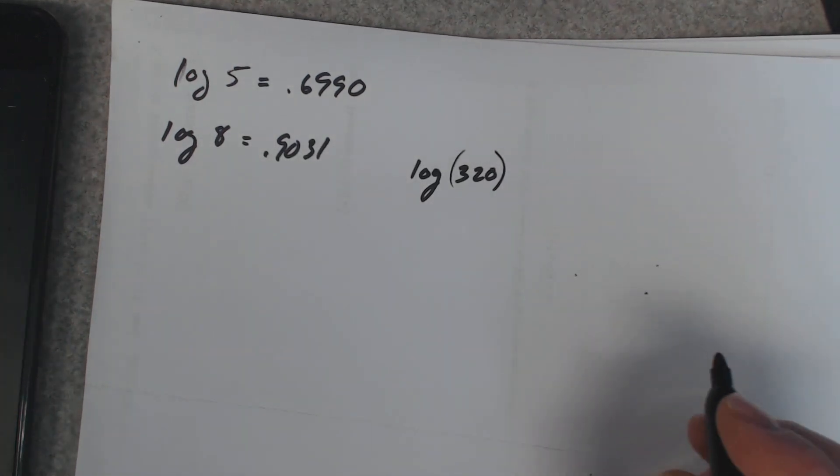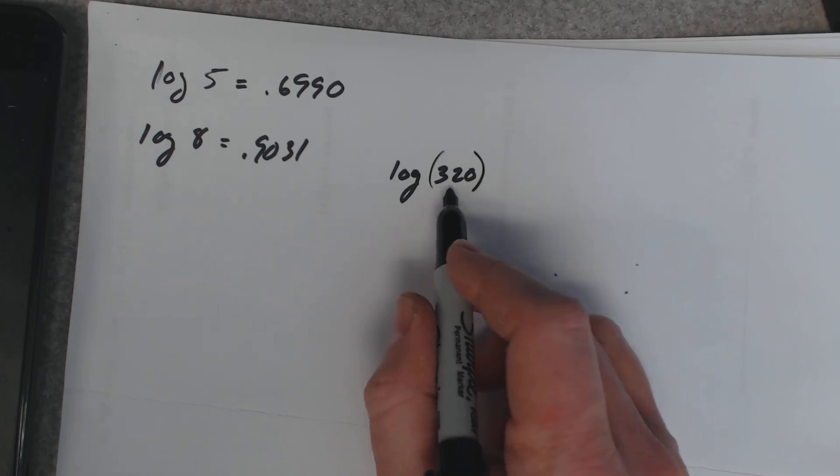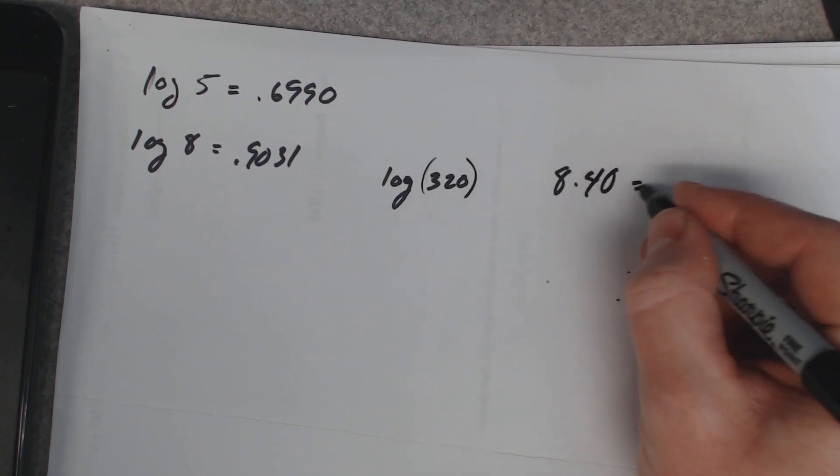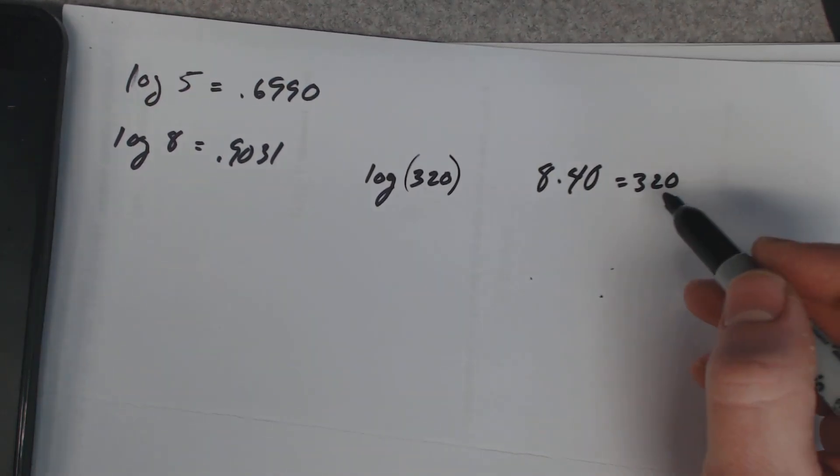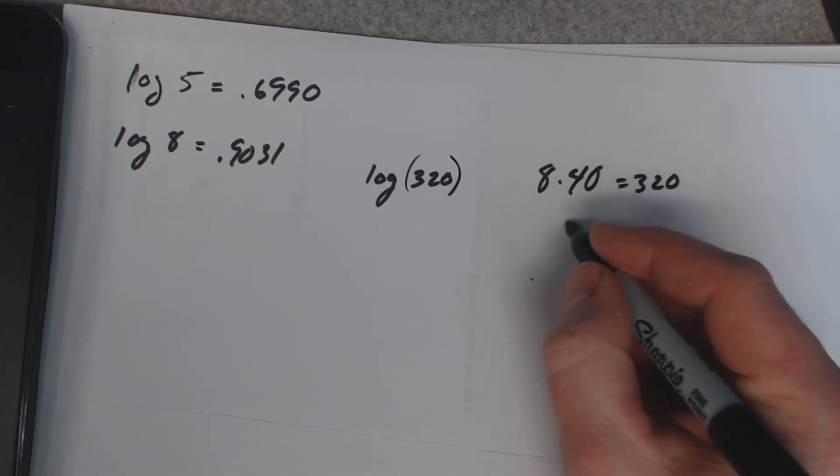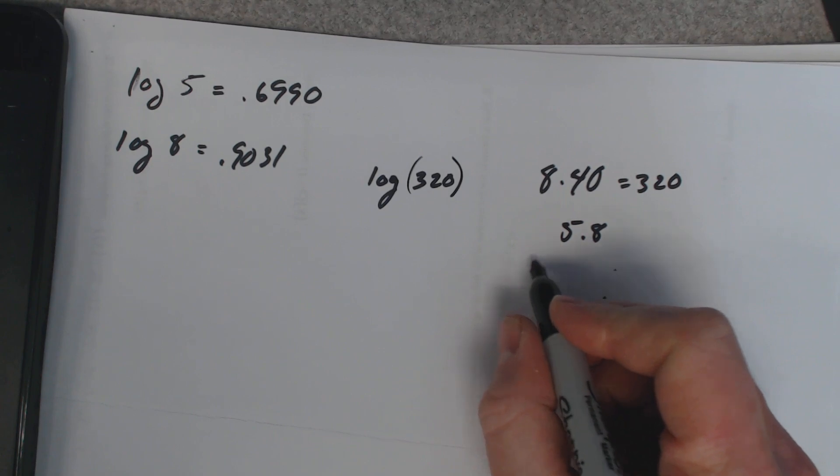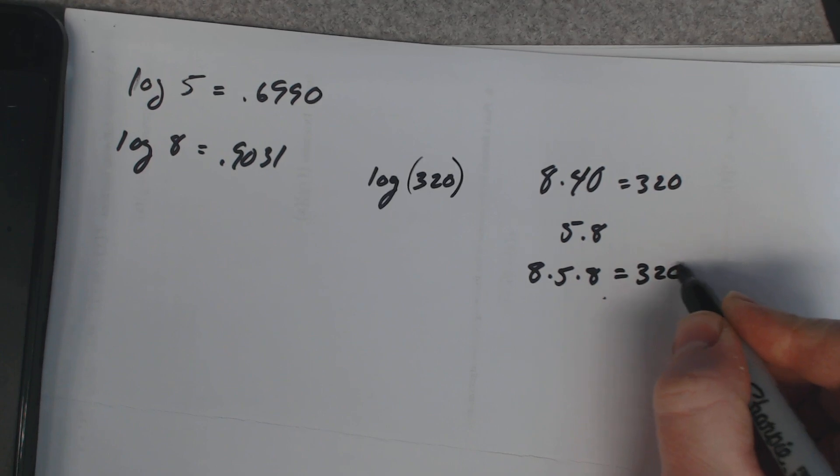If you think about it, 8 times 4 is 32, so 8 times 40 would be 320. You're supposed to do all this without a calculator. And then 40 is the same thing as 5 times 8, so if you took 8 times 5 times 8 that equals 320.